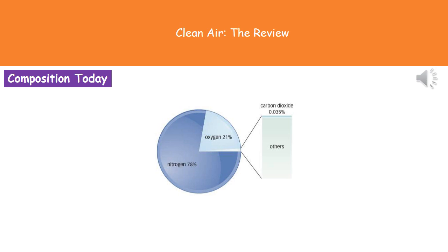Welcome to our review on clean air. First thing we need to know about is what is actually found in the atmosphere today. One thing you need to remember for your exam are not only the names of the key gases, but also those percentages. Nitrogen equates to 78% of our atmosphere, oxygen is 21%, and those are the two they're most likely to ask you about, so remember both the names and those two percentages.